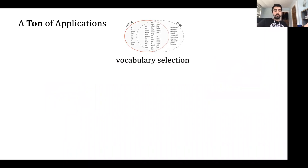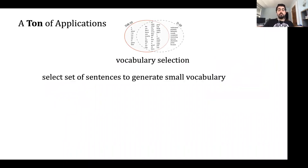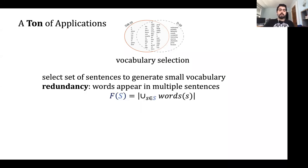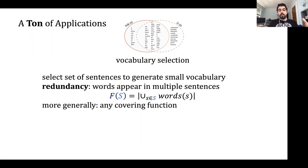Another example is vocabulary selection. Say we have a bunch of sentences and we want to select some of them to generate a small vocabulary of words. We're evaluating the size of the union of words in these sentences — some words appear in multiple sentences, so there is redundancy. This immediately signifies that F(S) is a submodular function. More generally, taking the union of sets is a covering function and has many applications.